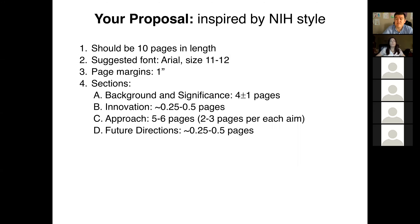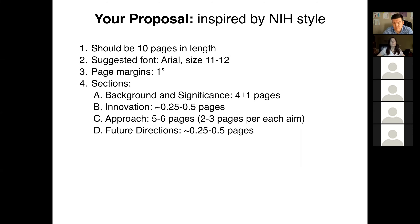You will have similar sections as those in the NIH document; however, there will be some slight modifications because your proposal is going to be slightly shorter. For the background and significance section, you should plan for something like 4 plus or minus 1 pages, depending on where you place information that is relevant to your study.